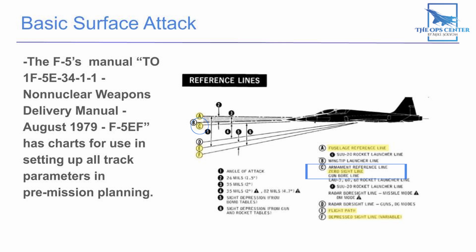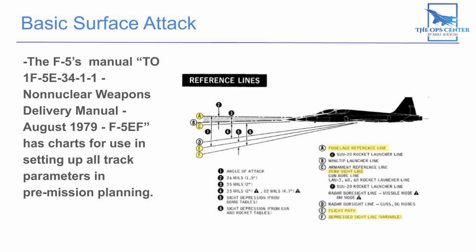The zero sight line is where our gun sight is looking when we have it set to zero depression. On the F-5, which we'll be using in our example, that puts it about two degrees beneath the fuselage reference line. Since any bomb we drop is going to fly a trajectory underneath our flight path, any depression we dial into our gun sight is going to have to take angle of attack into account — that gun sight is going to end up pointing somewhere beneath our flight path.